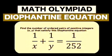Find the number of ordered pairs of positive integers x, y that satisfy this Diophantine equation: 1 over x plus 1 over y equals 1 over 252. You can pause the video and try this problem first.